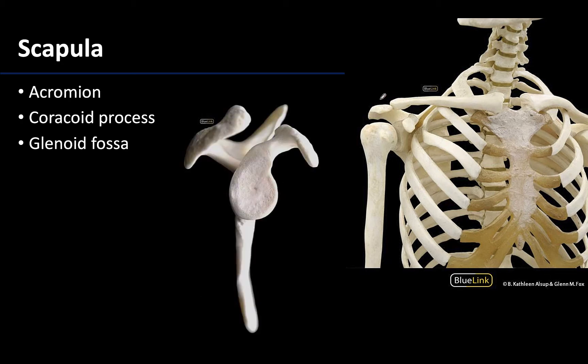Here is the acromion of the scapula. To me this is one of the most dominant structures of the scapula, and it can actually vary in width and size. That variability can affect structures that run deep to it, so you're going to have structures running under this area, such as the supraspinatus tendon.